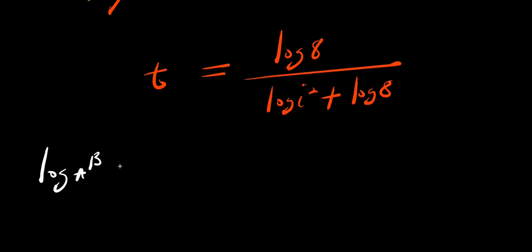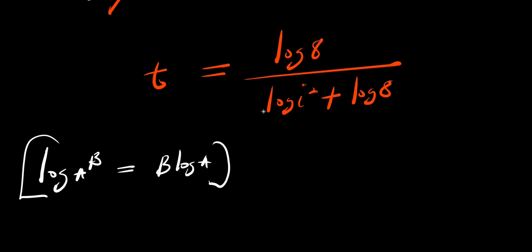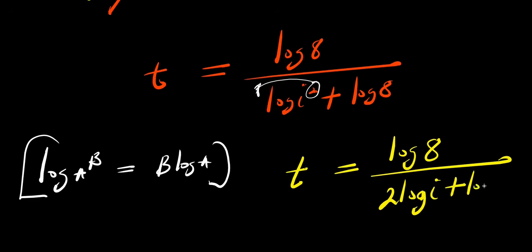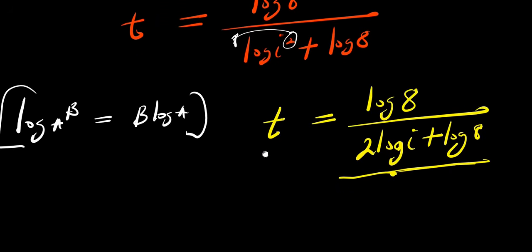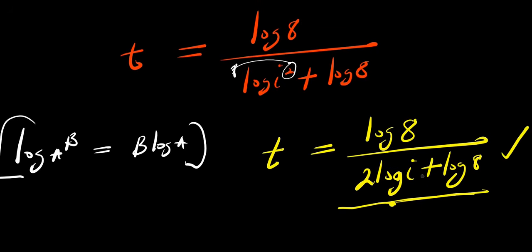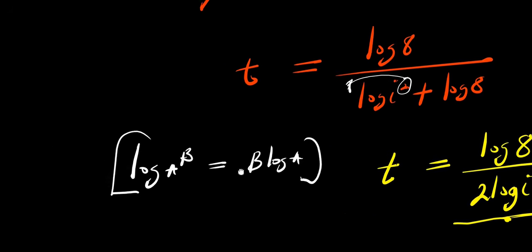Now I can also apply the property log A to the power B equals B times log A, so the 2 will come in front of the log. That means I'm simply going to have T equals log 8 divided by 2 log i plus log 8. This is the answer from the first method.